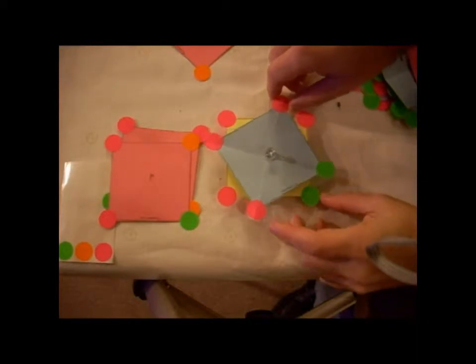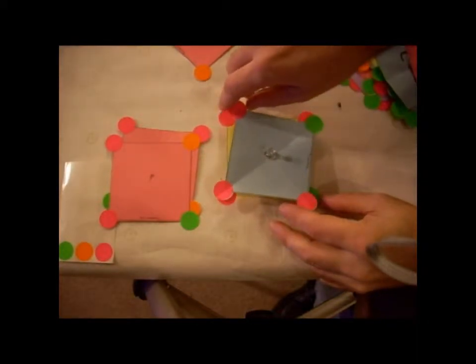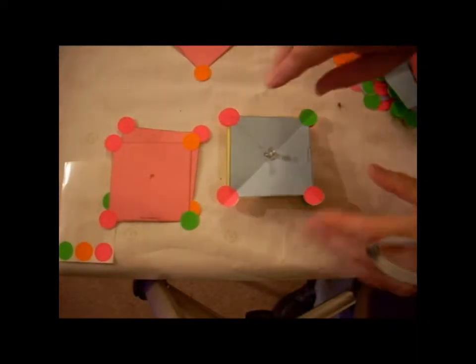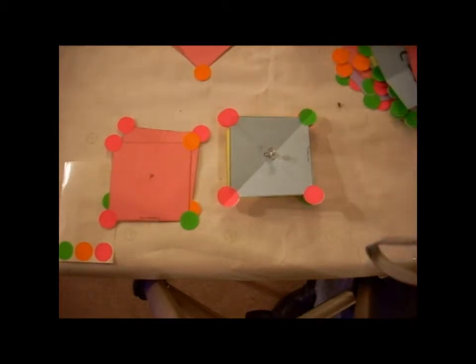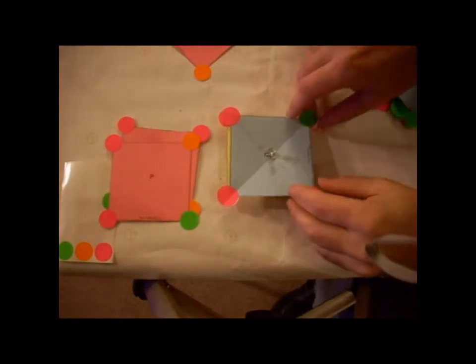We will rotate counterclockwise 90 degrees. And we see that most of them line up, but we have a green over a pink. This tells us that this molecule does not have a C4.